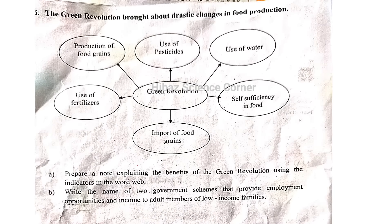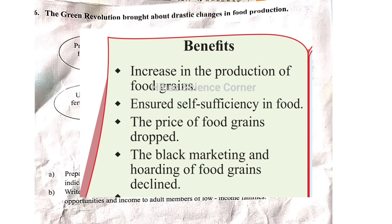The Green Revolution brought about drastic changes in food production. The benefits of the Green Revolution include: increase in the production of food grains, ensuring self-sufficiency in food, price of food grains dropped, and black marketing and hoarding of food grains declined.